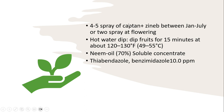Fungicides include 4 to 5 sprays of Captan or Zineb between January to July. Hot water dip in fruits for 15 minutes is also effective. So that was all about mango anthracnose — I hope you liked the video.